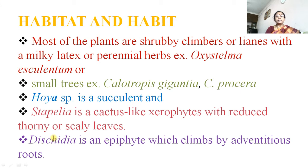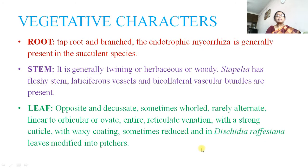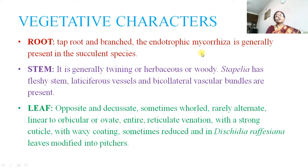Dystedia is an epiphytic plant which climbs by adventitious roots. Vegetative characters: root — the family belongs to Dicot, so naturally there is a tap root system and they are branched. Endotrophic mycorrhizae is also generally present in the succulent species. Stem is generally twining or herbaceous or woody; Stapelia has fleshy stem, and laticiferous vessels and bi-collateral vascular bundles are present in the stem.